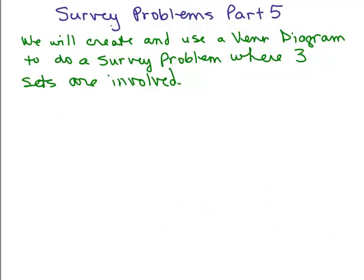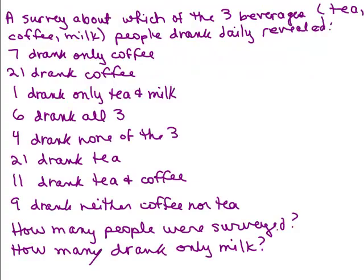This is Survey Problems Part 5. We're going to create and use a Venn diagram to answer a survey problem where three sets are involved. So here's our problem. A survey about which of the three beverages, tea, coffee, milk, people drank daily revealed the following.